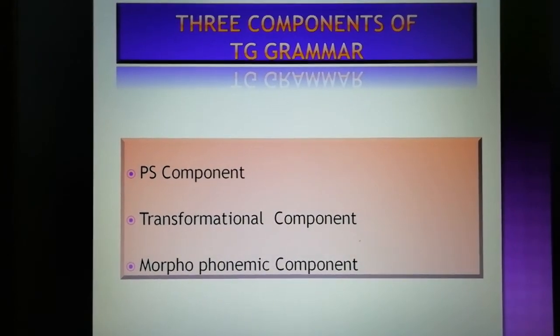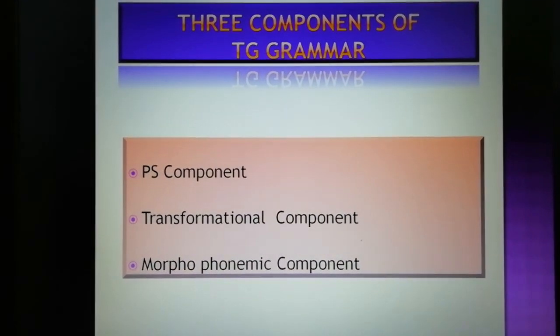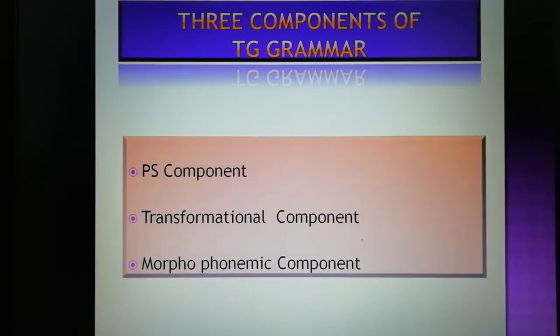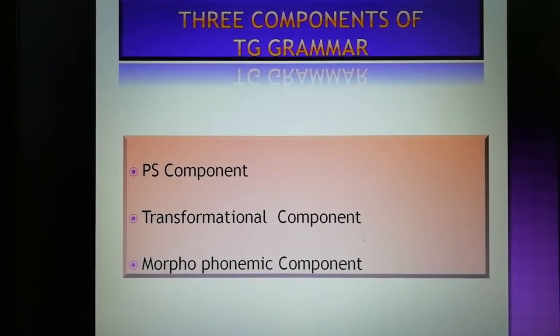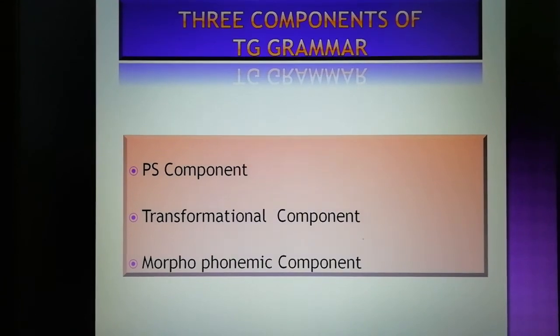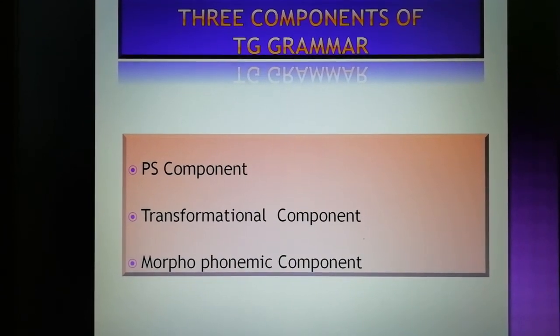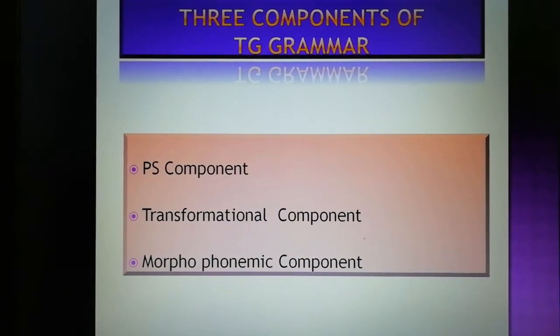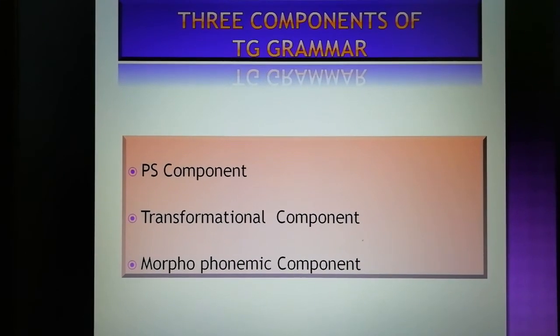The morphophonemic rules convert these symbols into words and sounds. While phrase structure grammar and IC analysis deal with the constituent structures of sentences, TG grammar points out the relationships between sentences.